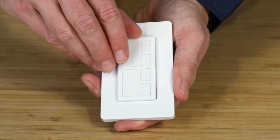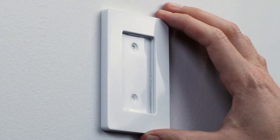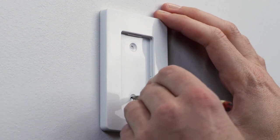The remote can be installed with the provided wall mount and hardware. Remove the remote from the wall mount. Mark the location for the wall mount and drill the appropriately sized holes based on the installation surface.